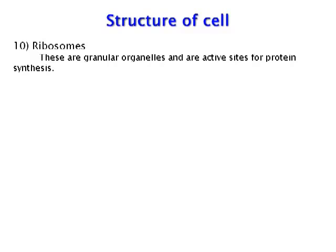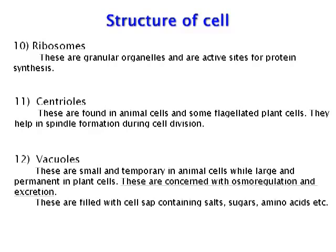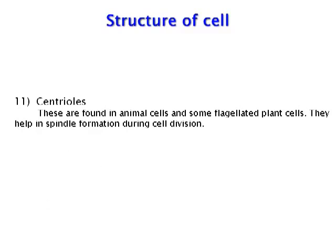Ribosomes are granular organelles and are active sites for protein synthesis. Centrioles are found in animal cells and some flagellated plant cells; they help in spindle formation during cell division. Vacuoles are small and temporary in animal cells but large and permanent in plant cells; they are concerned with osmoregulation and excretion, and are filled with cell sap containing salts, sugars, amino acids, etc.